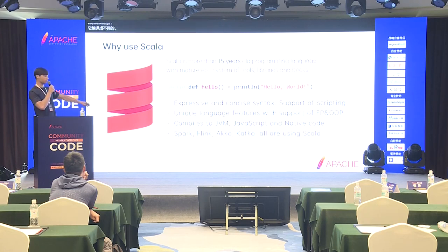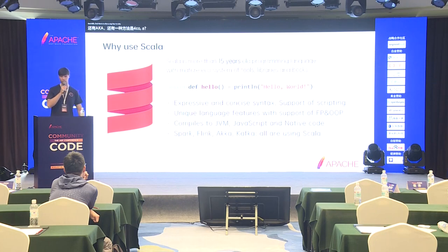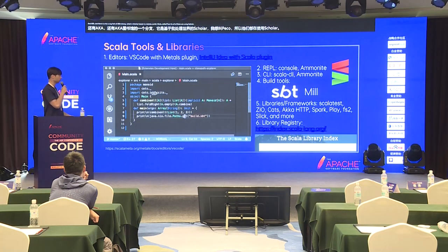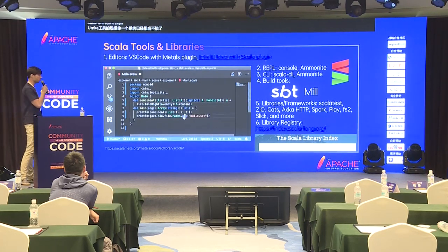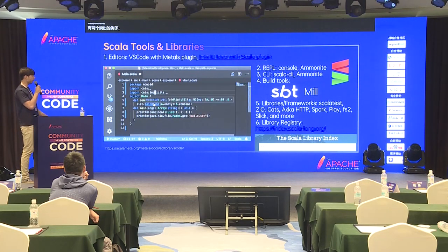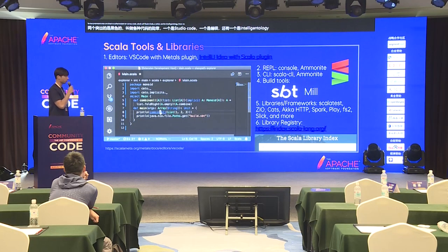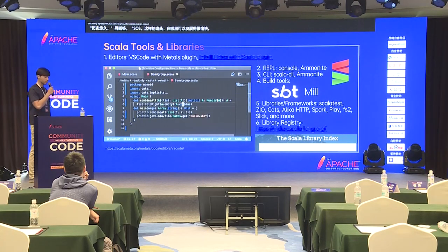It compiles to different targets: JVM, JavaScript, and native code as well. Apache projects like Apache Spark, Flink, Apache Kafka, and Akka are all using Scala. There's also a fork of the Akka library which is Scala-based in the Apache world, called Pekko. The Scala ecosystem has quite good editor support. Two prominent ones are a plugin called Metals for VS Code, and for IntelliJ there's a long-standing plugin called the Scala plugin, where you can develop Scala applications very pleasantly.